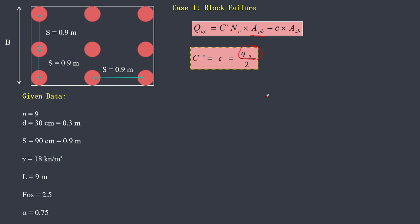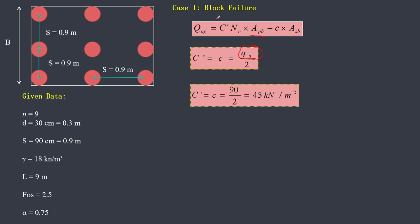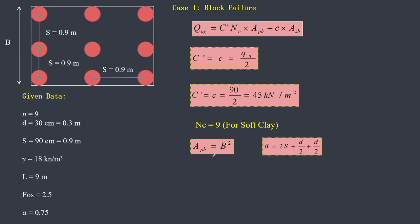This is from the shear strength chapter: c = qu / 2 = 90 / 2 = 45 kN/m². Next, the value of nc — usually given in the numerical, but if not given, for soft to medium hard clay you can assume nc = 9. Next, Apb is the area of the block. Since all nine piles form the block, and it is a square arrangement, the area = b².